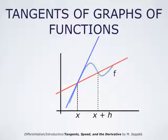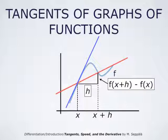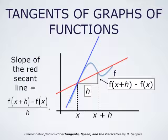So these are the two points at which the red secant line intersects the graph of f. In order to compute the slope of the red secant line we draw the right angle triangle shown here. The vertical cathete of this right angle triangle has the length f(x+h) minus f(x), and the horizontal cathete has the length h. This means that the slope of the red secant line is f(x+h) minus f(x) divided by h. This is also called the rate of change of f at x.